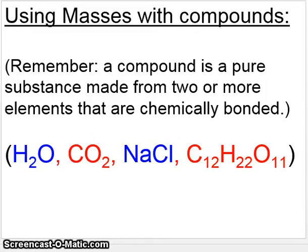This will be Lesson 5 of Chapter 3, and here we will talk about using masses with compounds. Previously we talked about using masses with elements, and the number on the periodic table that we focused on was that atomic mass. So we said for example, for carbon, the 12.01 is how many grams there are in a mole of carbon.